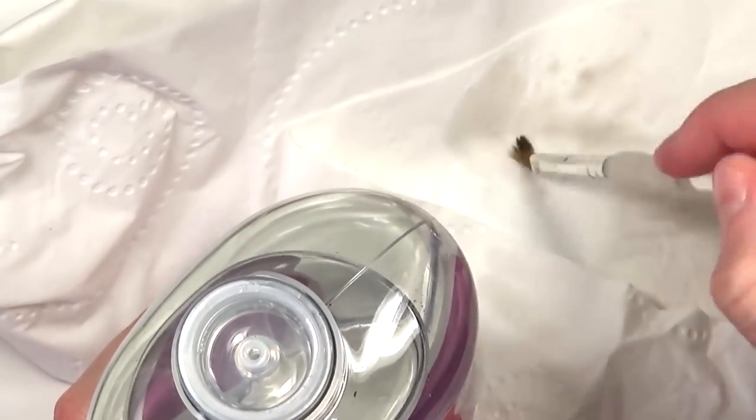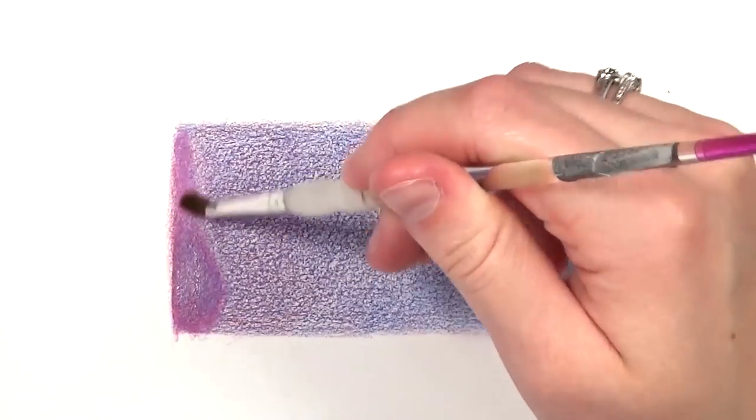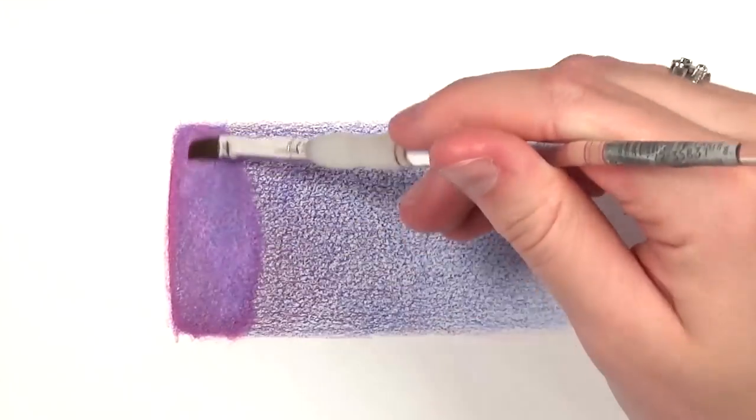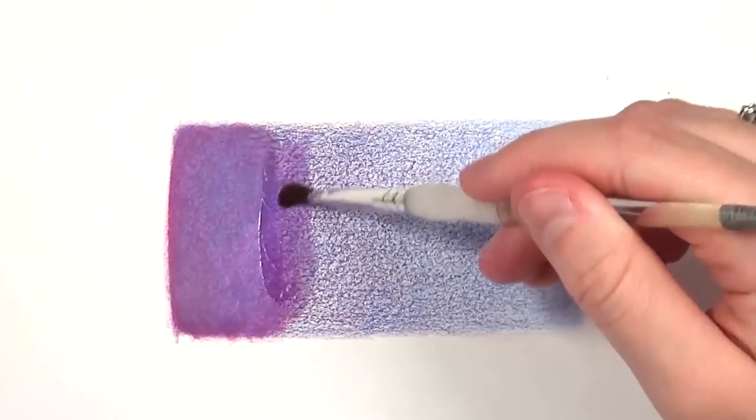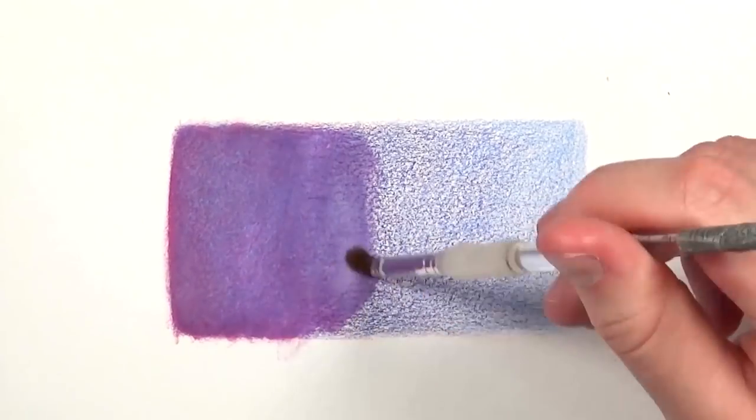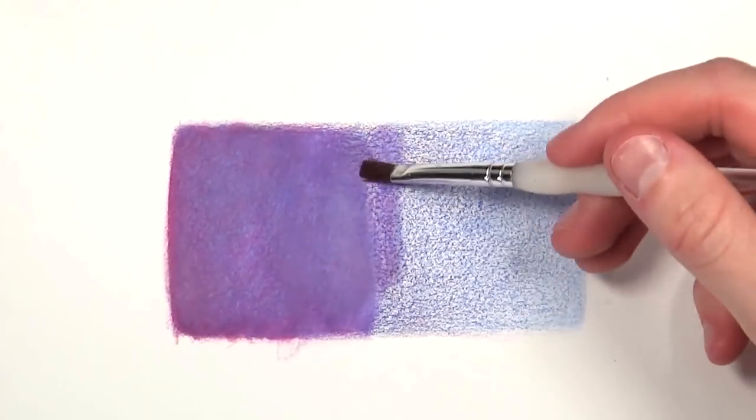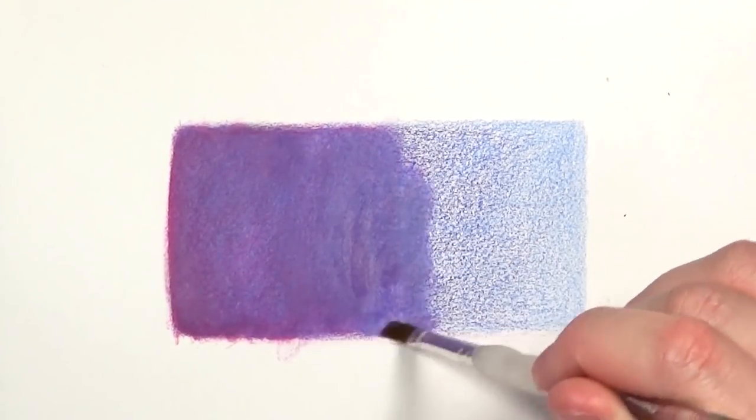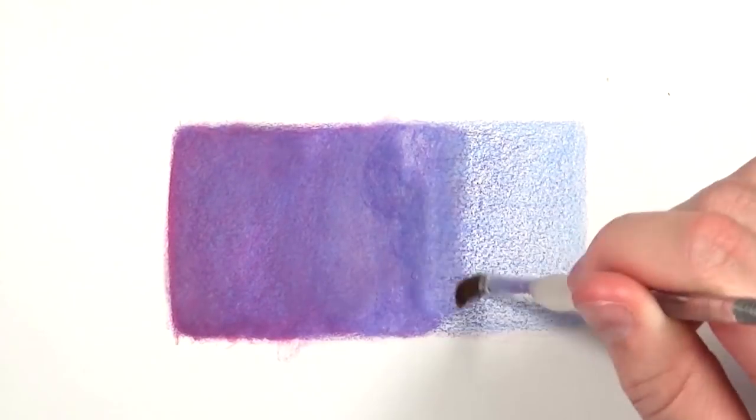Tip number five is to do with blending color pencils. I normally like to use solvent to blend or use burnishing, but if you don't have solvent or you find it too expensive then you might have some of this around the house. You can use baby oil. Even though this isn't as archival as the others, so if you're selling your work I wouldn't recommend doing this method, if you're just practicing and you want to get a feel for blending color pencils then this is a really good thing to use.